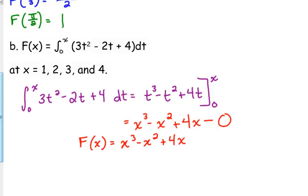So, that means big F of X is equal to X cubed minus X squared plus four X. If we want to know F of one, all we have to do is plug in one into that function. We've got one cubed minus one squared. That's zero. Four times one is four. So, F of one is four.